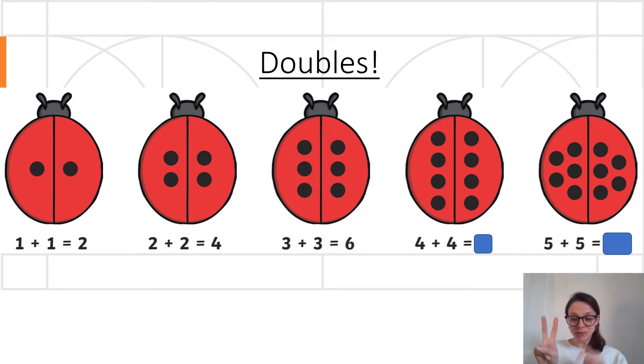What about two then? Two and two. One, two, three, four. Double two is four. Fantastic. Well done.